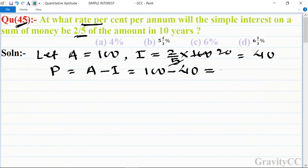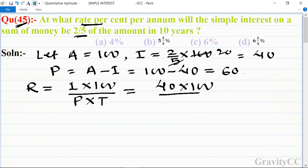Therefore rate of interest is equal to I times 100 upon P times T, so 40 times 100 upon 60 times 10. Zero zero cancel and again zero zero cancel, and table of 2, 20 and 3.